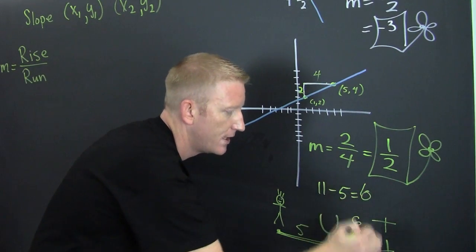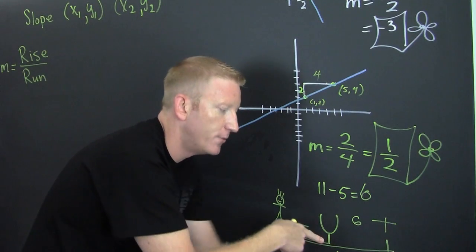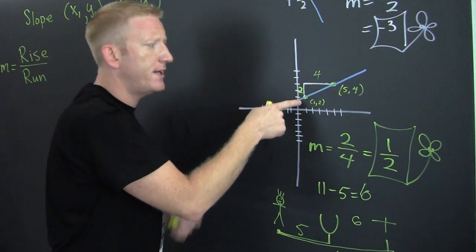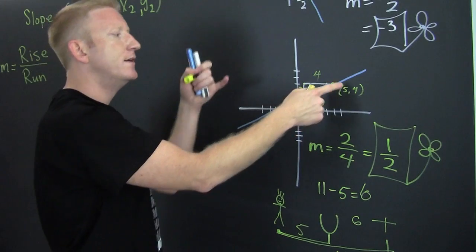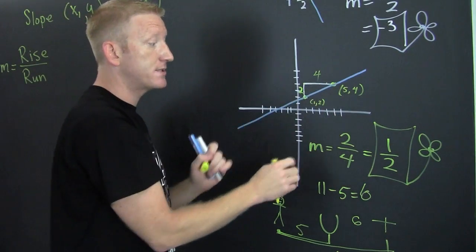Because I take the big one, subtract off the small one, and that gives me the leftovers. And that's what we're gonna do right here when we're looking for the change in y and the change in x.